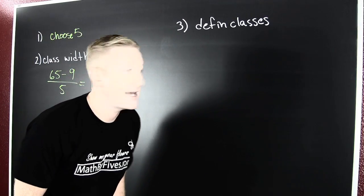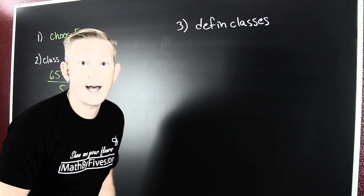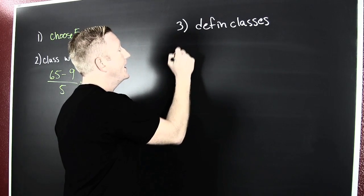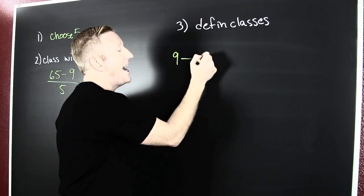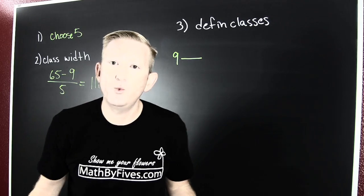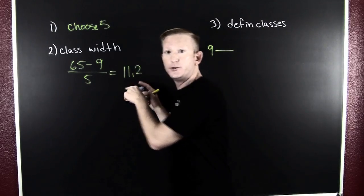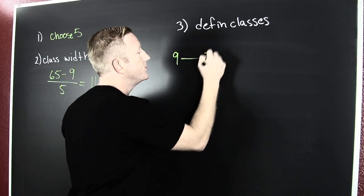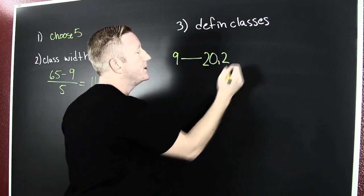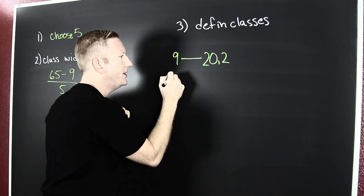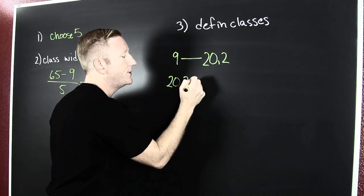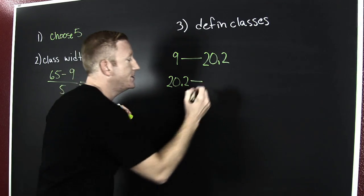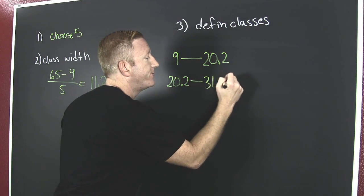And now it's time to create our, or define our classes. And here's how we do it. We start at the low value, 9. And what do we do? We add the class width, which was 11.2. So then, we can go back over here. 9 plus 11.2 is 20.2. Now I take that as my end point here. 20.2. And then I'm going to add that class width to it again. 11.2. And when I do, I get 31.4.